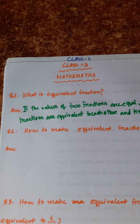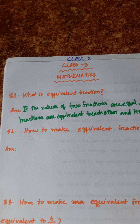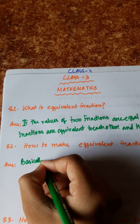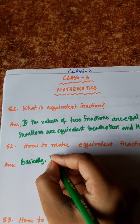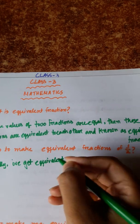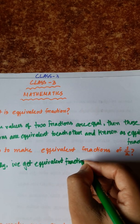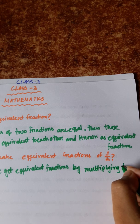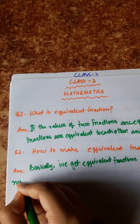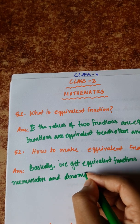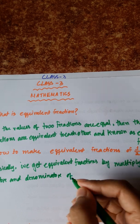Equivalent fractions can be obtained by multiplying the numerator and denominator of a fraction by the same number. We get equivalent fractions by multiplying the numerator and denominator of a fraction with the same number.